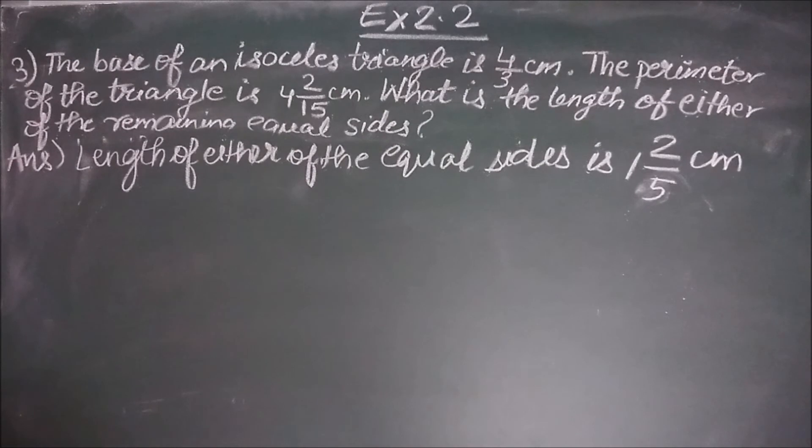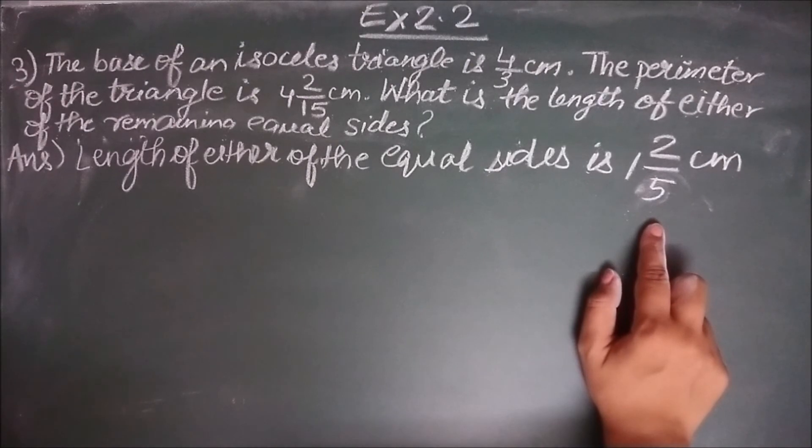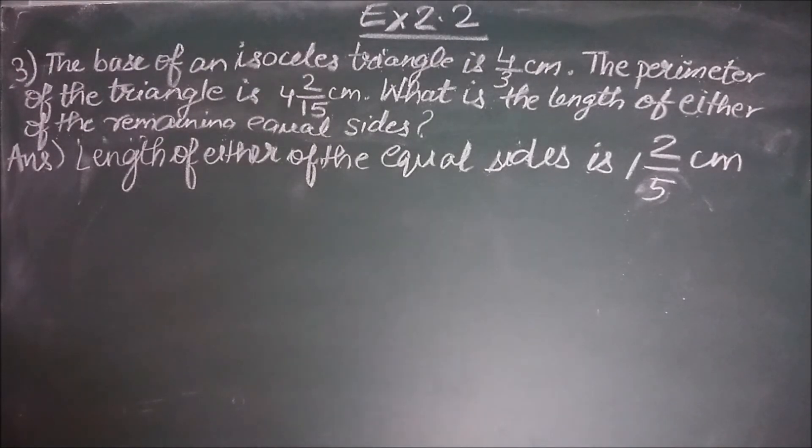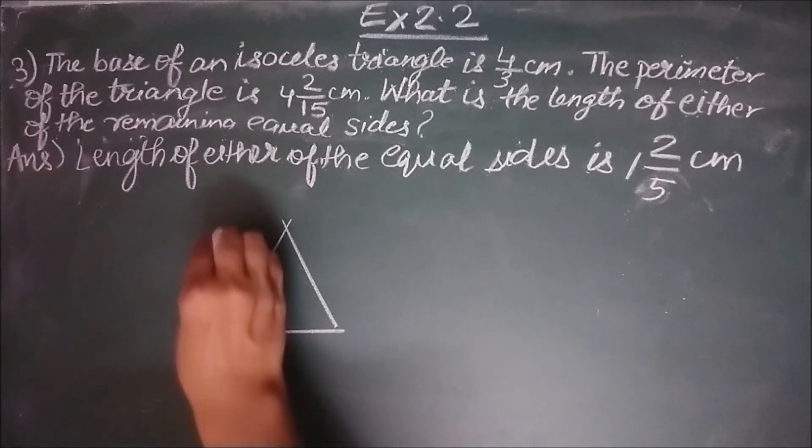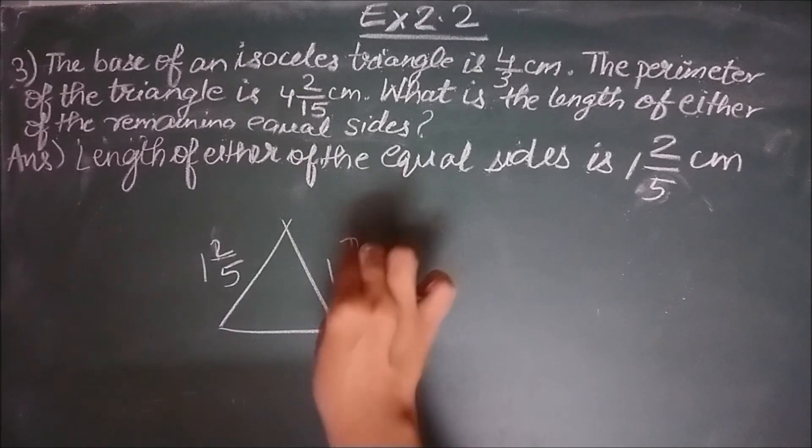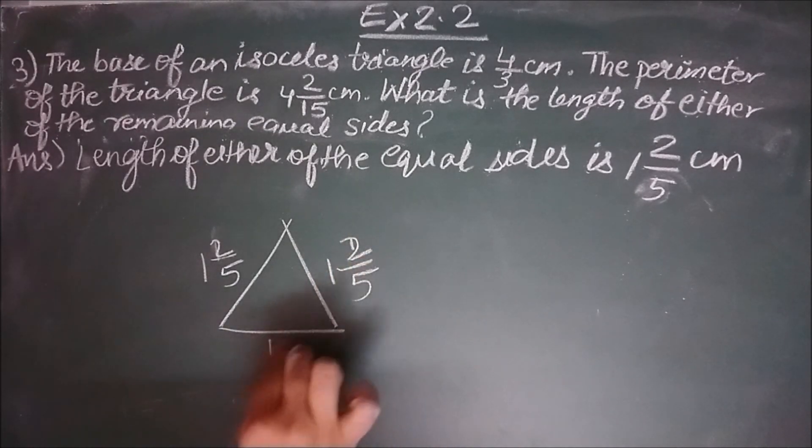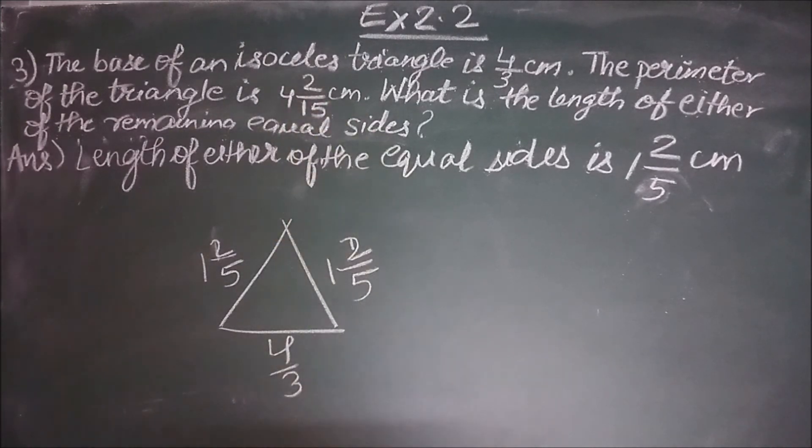You may also check your result by using the second statement here. You may substitute the value of the equal side in the formula that we found, or in general in this triangle. So this is 1 2 by 5, this is 1 2 by 5, and this is 4 by 3. You may try to add all these 3 and see if you get 4 2 by 15. If you are getting it, that means your answer is correct.